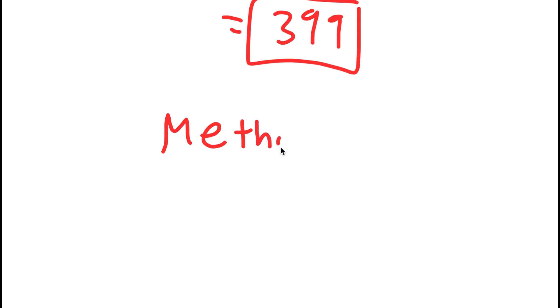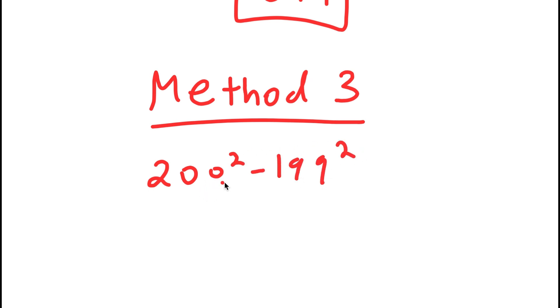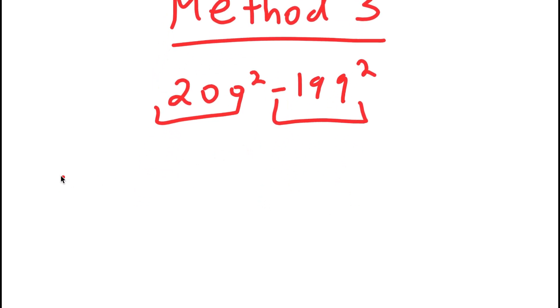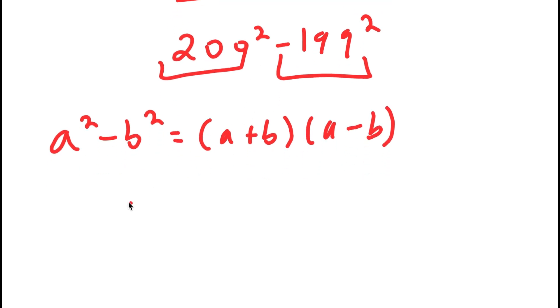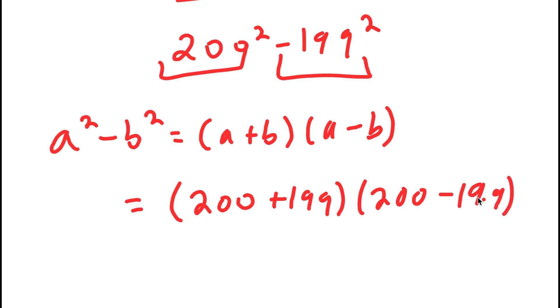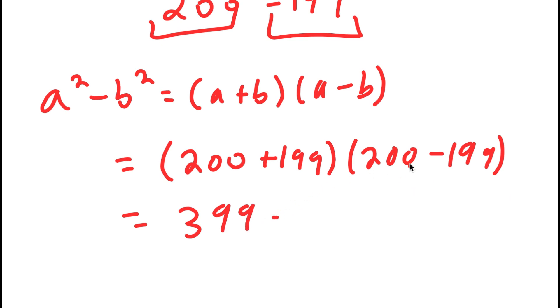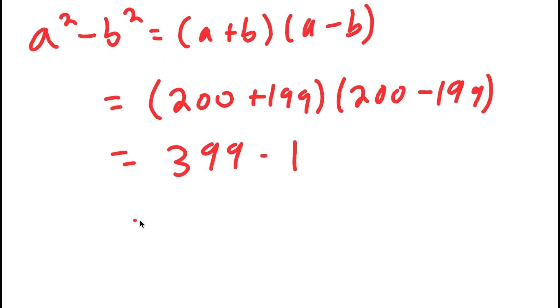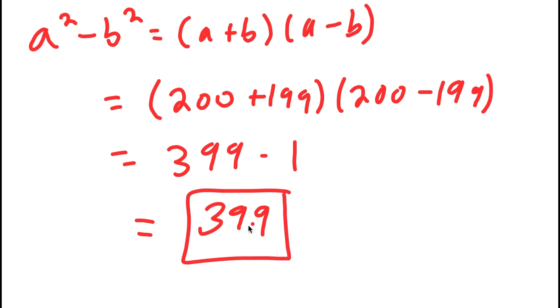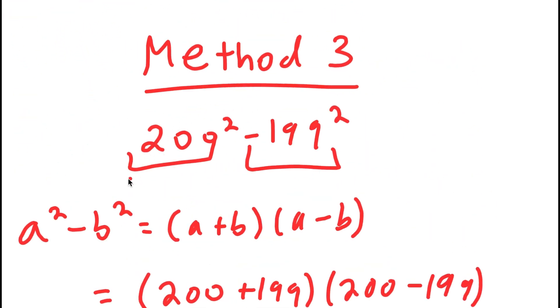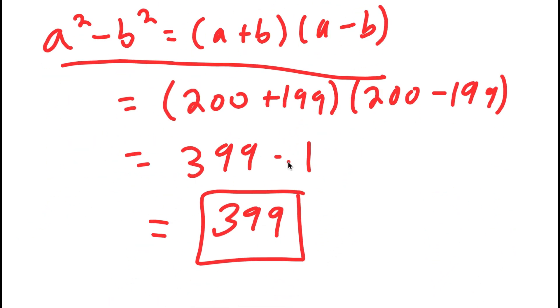Finally, for method number three, I have 200 squared minus 199 squared. Instead of rewriting either term, I'll use the difference of squares property: a squared minus b squared equals (a plus b)(a minus b). Applying this gives (200 plus 199) times (200 minus 199), which is 399 times 1, which is just 399. This is probably the most efficient of the three methods. Whenever you see a number squared minus another number squared, always use this property because it solves the problem the fastest.